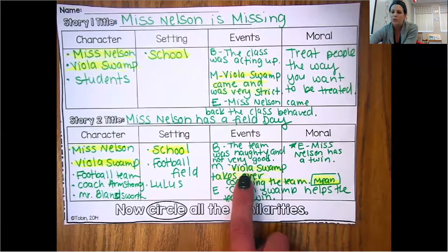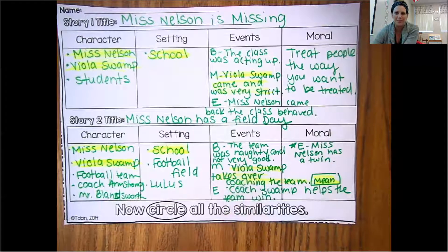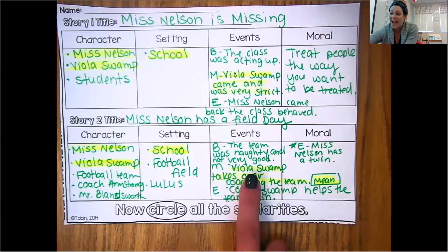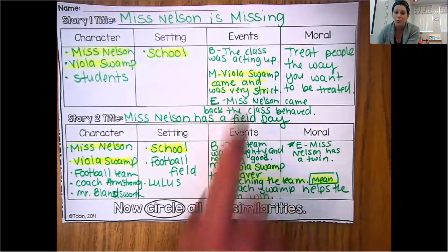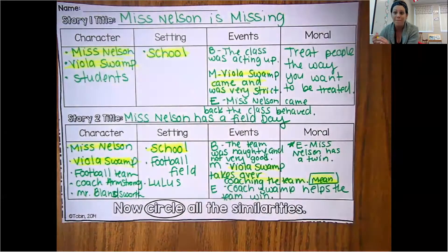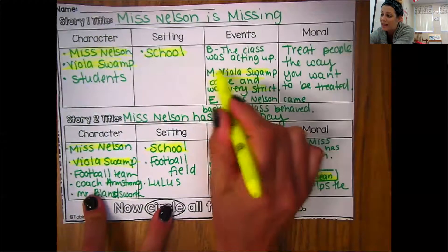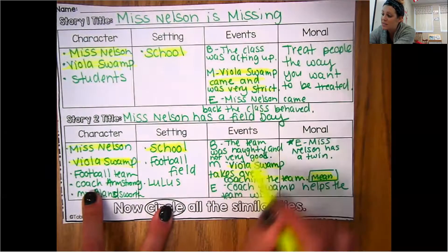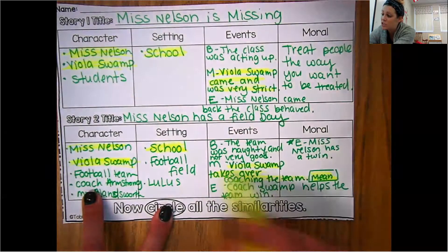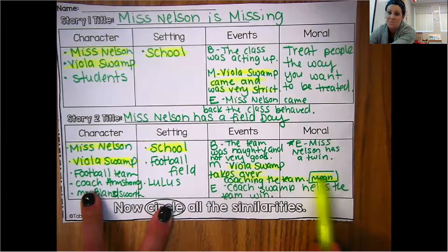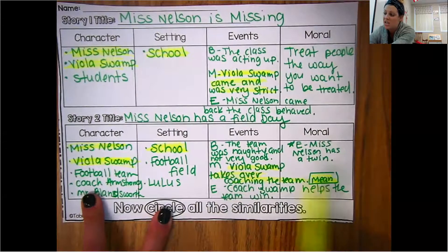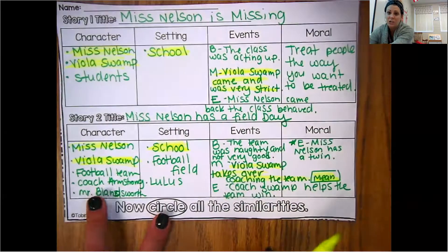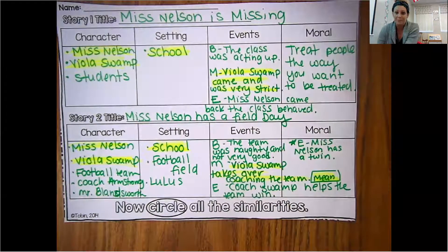So then in the middle of this story, who comes? Miss Viola Swamp. And that is similar in both stories — in the middle of both. So let's highlight that Miss Viola Swamp comes and she's mean and she's strict. Let's make sure we include that.